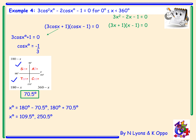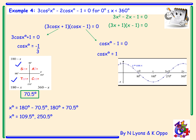We then go to the second bracket, cos x − 1 = 0, which rearranges to give cos x = 1. It's a good idea to draw the cosine graph out to clearly see that cos x equals 1 in two places. However, we were only to solve for x less than 360, so we discard 360 degrees and just have x = 0.